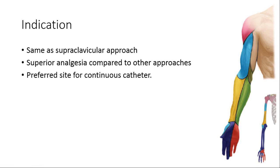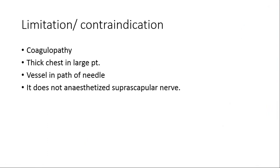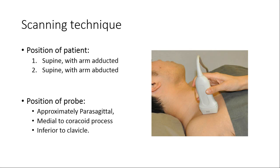This block is suitable for surgery of the elbow, forearm, and hand. Important considerations include that this is a less compressible area and a deeper block, so coagulopathy and vessels in the path are main contraindications. When plexus depth exceeds five centimeters and a linear probe is used, the block may be limited. Shoulder mobility during surgery is also a limitation since this block does not anesthetize the suprascapular nerve.